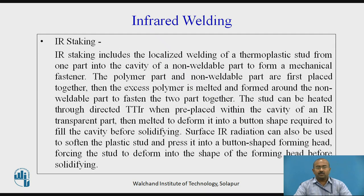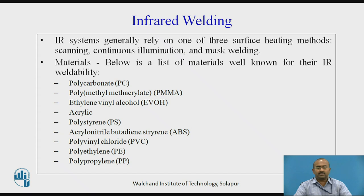IR staking includes the localized welding of a thermoplastic stud from one part into the cavity of a non-weldable part to form mechanical fasteners. Surface IR radiation can be used to soften the plastic studs and press them into a button-shaped forming head, forcing the stud to deform into the shape of the forming head before solidifying. IR systems generally rely on one of three surface heating methods: scanning, continuous illumination, and mask welding.